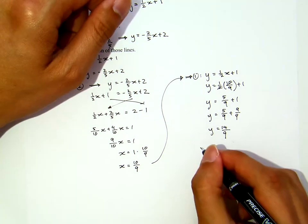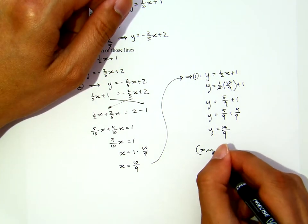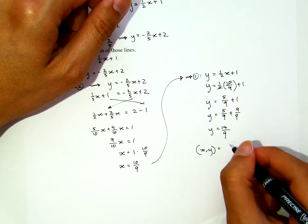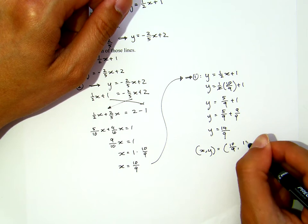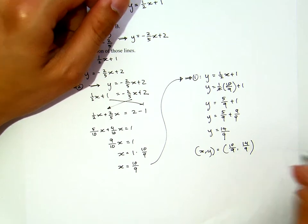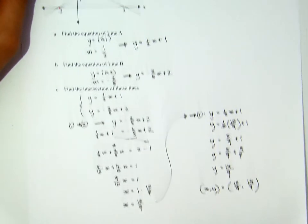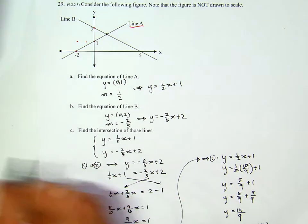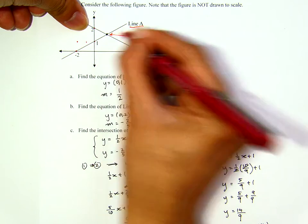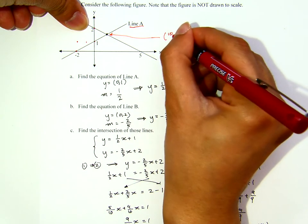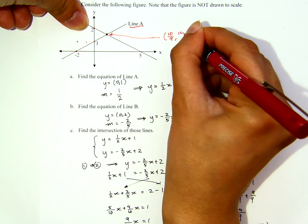So, the intersection will be x, y given by ten over nine comma fourteen over nine. In other words, if I go back to that picture here, then the coordinate of this intersection is given by ten over nine, fourteen over nine.